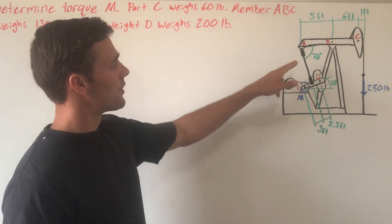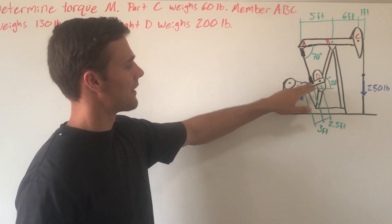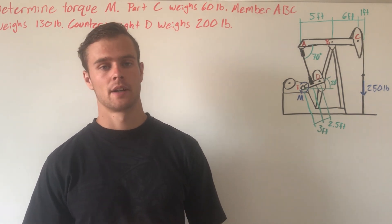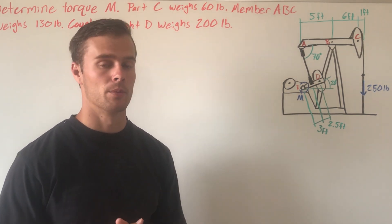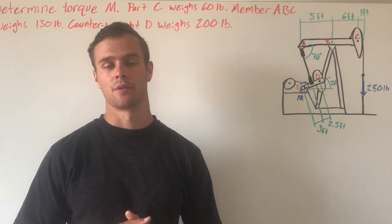We can notice that this rod is a two-force member—there's only forces acting at this end and this end. Therefore, they have to be equal in magnitude and opposite in direction. That means we don't have to draw it as a separate free body diagram.